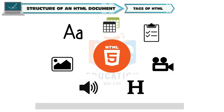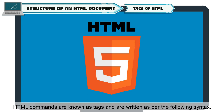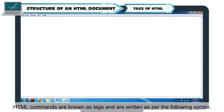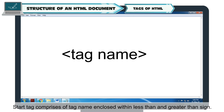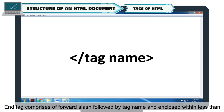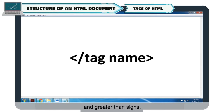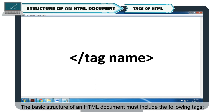Tags of HTML: HTML commands are known as tags and are written as per a specific syntax. Most HTML tags exist in pairs — that is, a start tag and an end tag. The start tag comprises a tag name enclosed within less-than and greater-than signs. The end tag comprises a forward slash followed by the tag name, enclosed within less-than and greater-than signs. The basic structure of an HTML document must include the following tags.